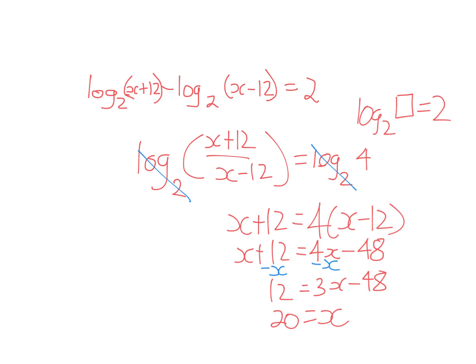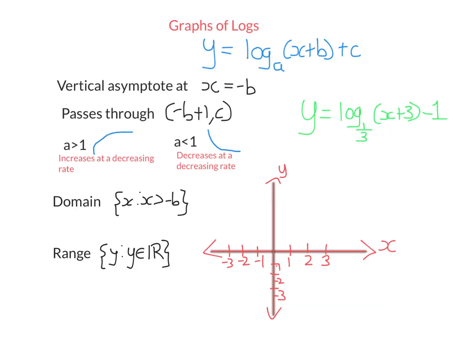Let's look at graphing logarithmic functions of the form log base a of (x + b) + c. They always have a vertical asymptote at x equals the negative of whatever's in the brackets, because you can't have log base a of 0 — no positive base raised to any power gives 0. They always pass through a key point, and an extra point helps you see the direction of the curve. If the base a is greater than 1, it increases at a decreasing rate. If the base is less than 1, it decreases at a decreasing rate. The domain is always x greater than the negative of b, and y can take any value.